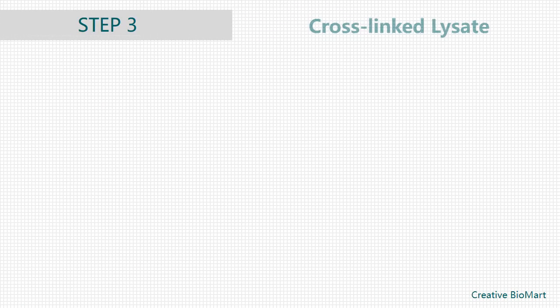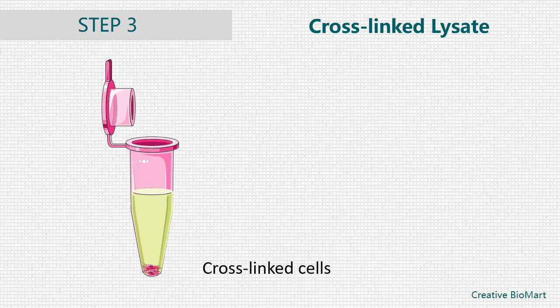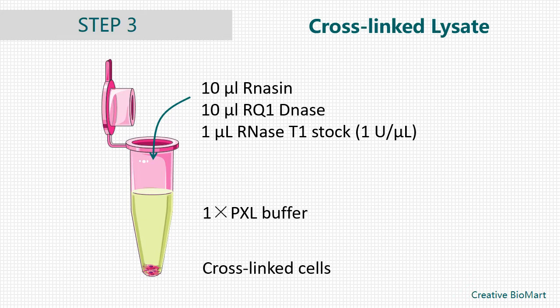Step 3, Cross-linked Lysate Workup. Lyse cross-linked cells using PXL, and sit the lysates on ice for 10 minutes. Add 10 µL RNasin and 10 µL RQ1 DNase to each tube. Incubate at 37°C for 15 minutes. Add 1 µL RNasin T1 stock to the solution. Incubate at 37°C for 10 minutes shaking at 1,000 RPM. Next, spin the lysates in a pre-chilled micro-ultracentrifuge at 90K for 25 minutes at 4°C.